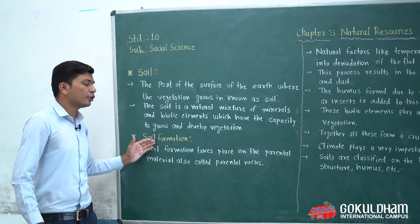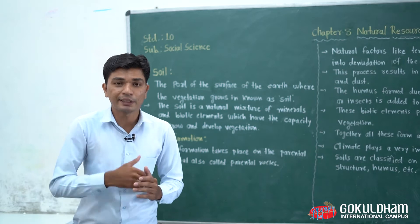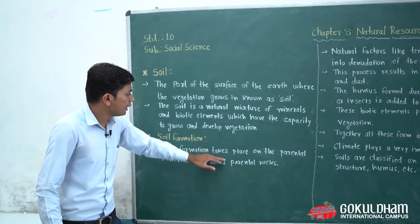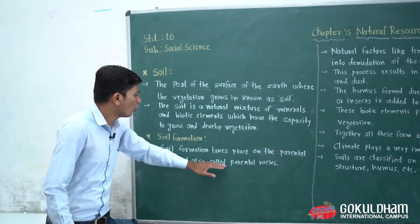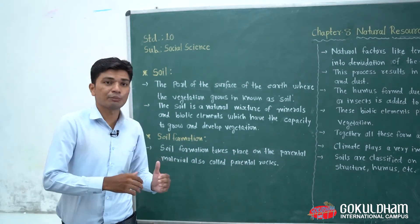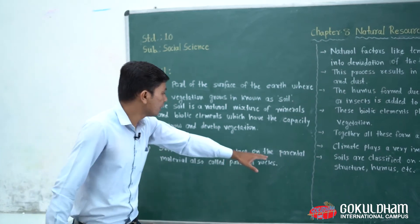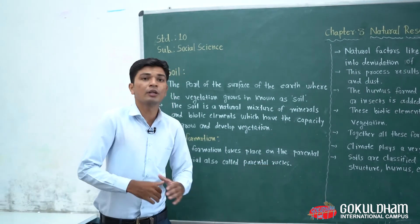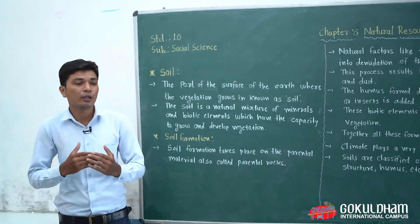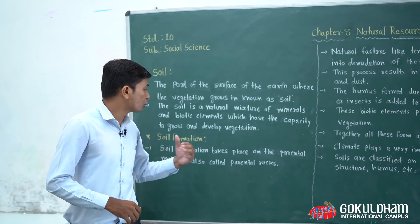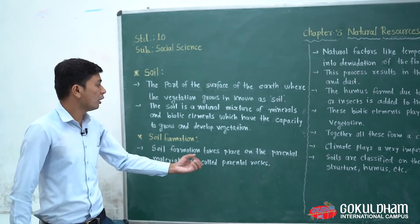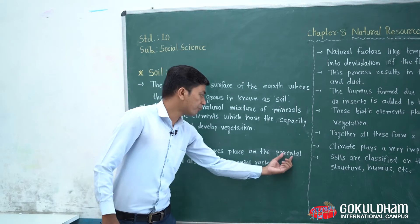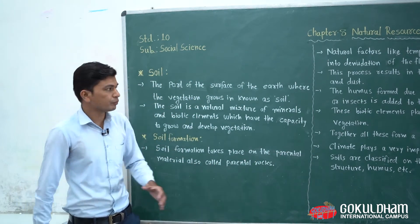Now we will see the formation of soil — how it forms. The soil formation takes place on the parental material, also called parental rocks. That means parental material is the base form for soil formation, and this parental material, also called parental rocks, is a basic element of it.